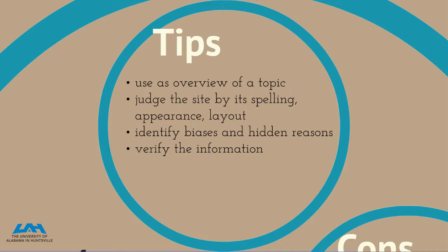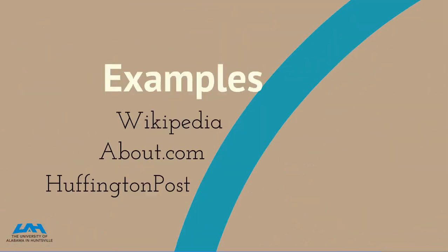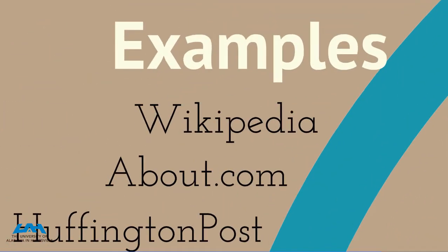Some general tips on using the web: use it at the beginning of a topic when you're just getting a broad overview. Judge a site by its spelling, appearance, and layout. Identify the biases of the site and hidden reasons for the site to exist — is this an advertisement site posing as a news site, or an organizational site with a strong personal bias posing as a non-biased source? Check those things out and verify the information. Examples of websites you might use include Wikipedia, About.com, and Huffington Post.